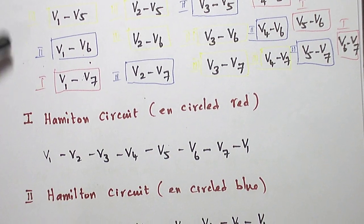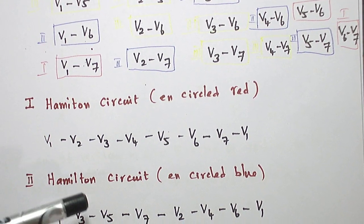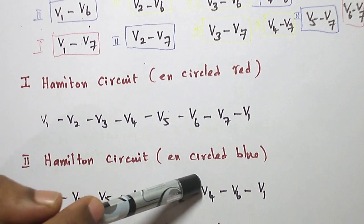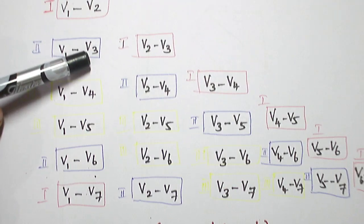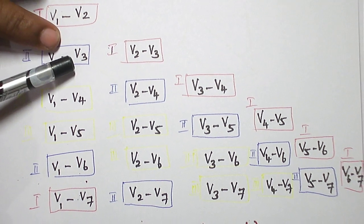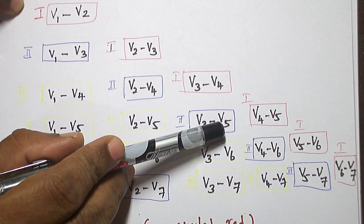Now, it is encircled in the color red. Now, let me give another Hamilton circuit. The edges are encircled in blue: V1 to V3. So it is ending at V3. Again, take an edge V3 to V5. It is ending at V5.